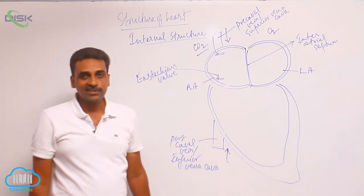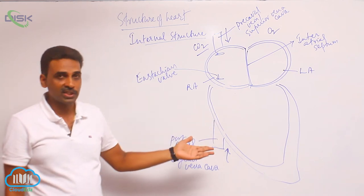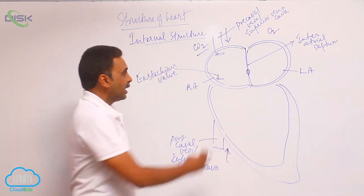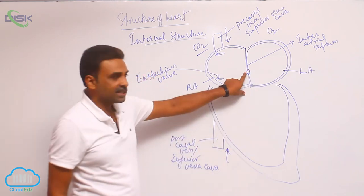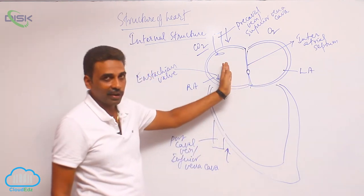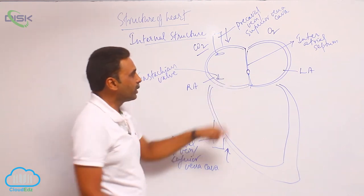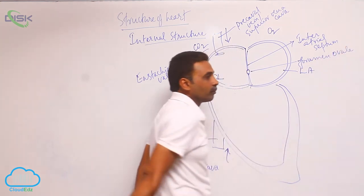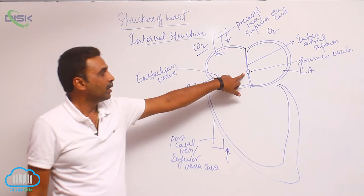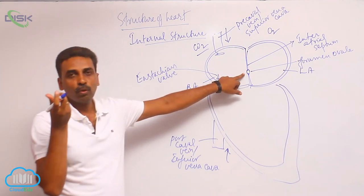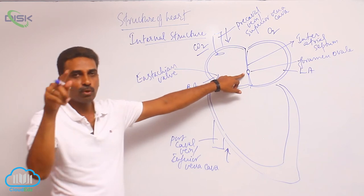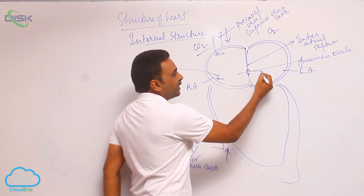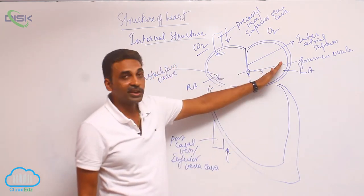This eustachian valve is rudimentary in adults; it is functional only in the embryonic stage. That is because there is an oval opening between the left and right atria in embryonic stages, called the foramen ovale. This opening facilitates the movement of blood from the right atrium to the left atrium in embryonic stages.